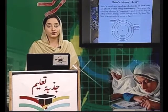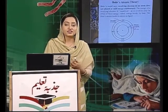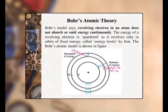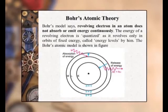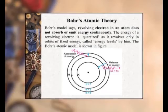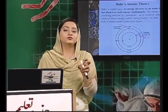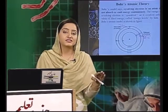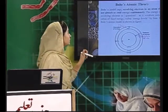جو next model ہم پڑھنے جا رہے ہیں وہ ہے Bohr atomic theory۔ Rutherford کی atomic theory کو further improve کیا گیا۔ Bohr کا model یہ کہتا ہے کہ nucleus کے گرد revolving electrons مسلسل energy release یا absorb نہیں کرتے۔ Bohr کی theory کے مطابق atom کے اندر revolving electrons کی energy quantized ہے۔ Quantized کا مطلب یہ ہے کہ وہ fixed energy orbit میں جب revolve کر رہے ہیں تو ان کی energy بھی کچھ fixed values تک رہے گی، زیادہ change نہیں آئے گی جیسا Rutherford نے کہا تھا کہ مسلسل change ہو گی۔ یہ بات Bohr کی theory کو Rutherford سے different کرتی ہے۔